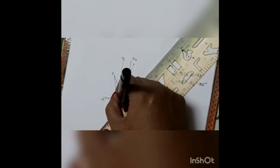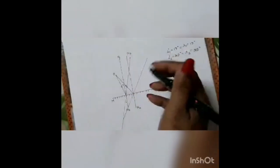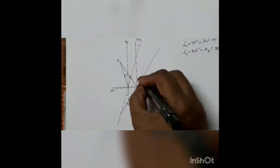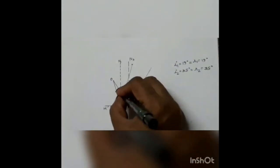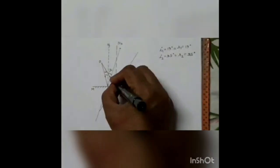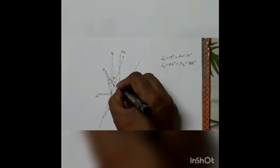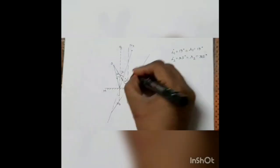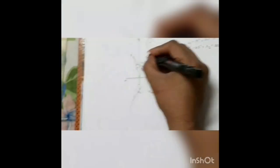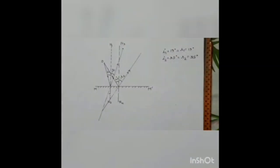We have to take it behind the mirror, and while taking it behind the mirror we have to make it dotted. So this is your angle of reflection 1, this is your angle of incidence 2, and this is your angle of reflection 2.